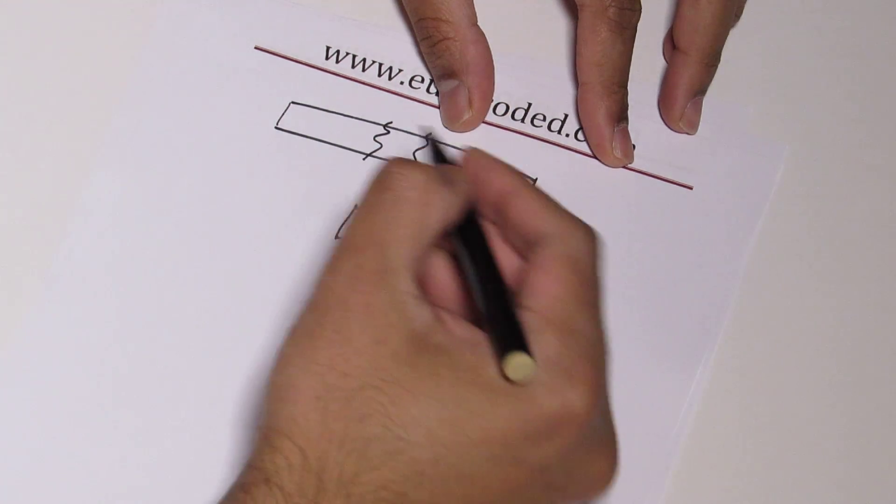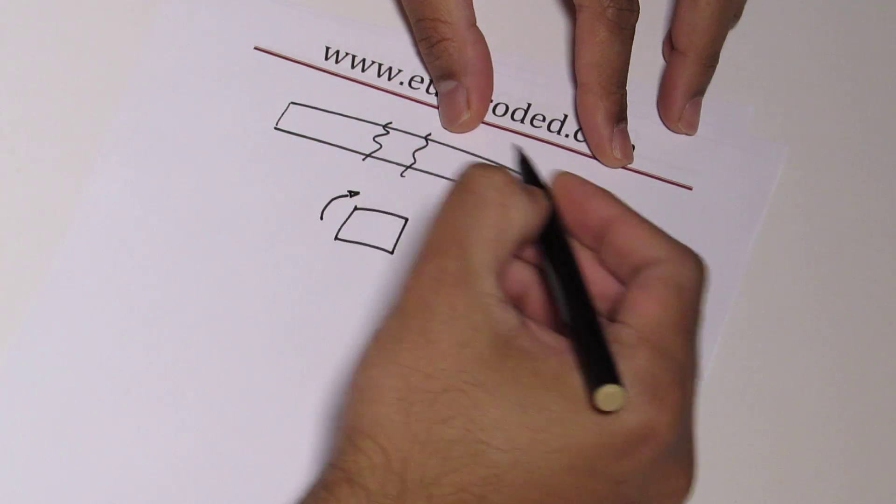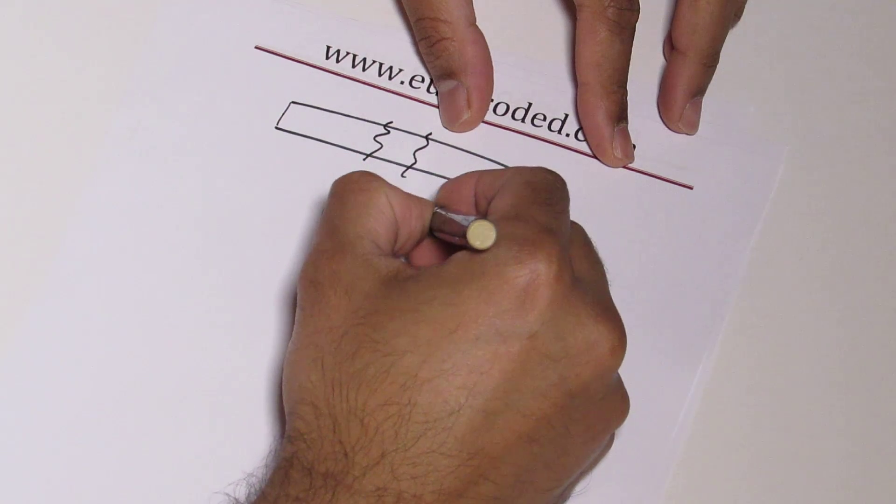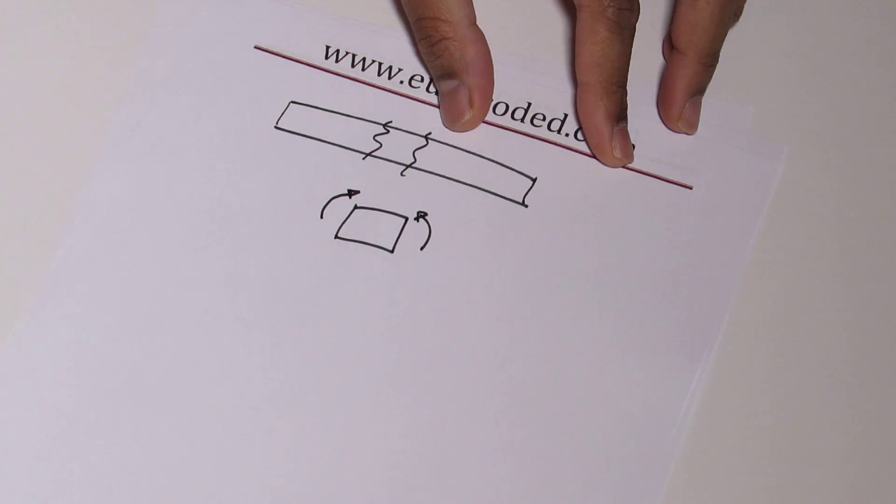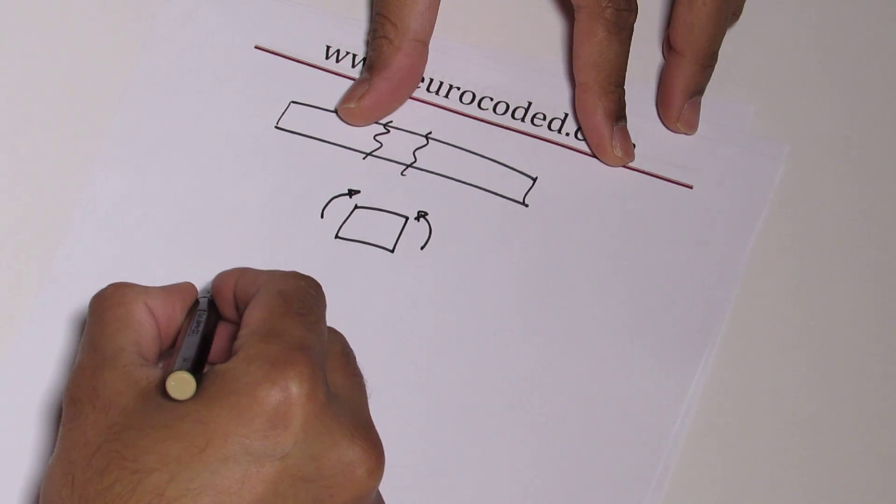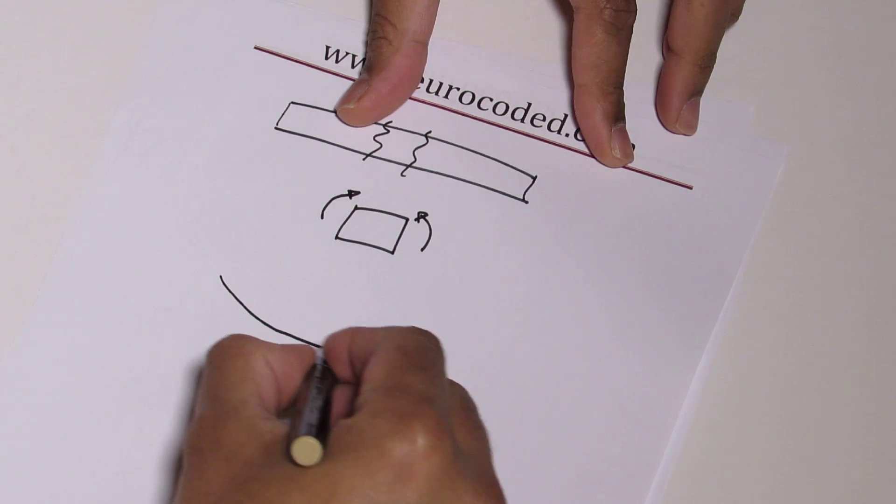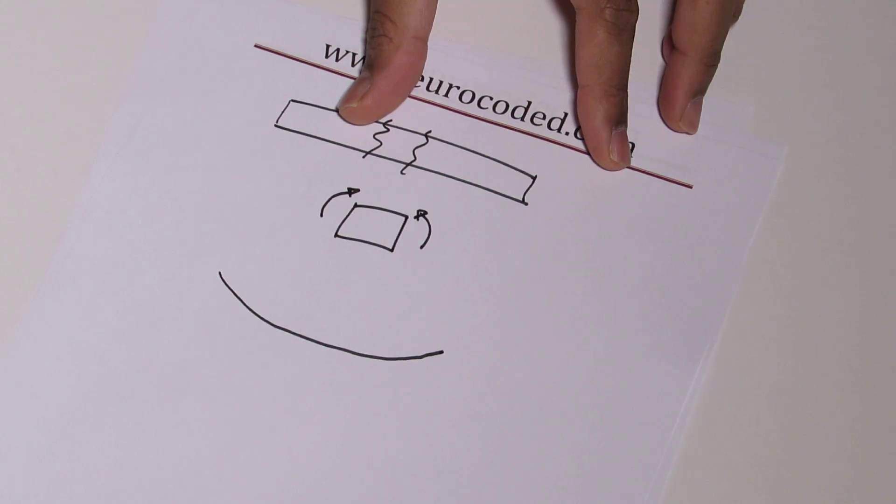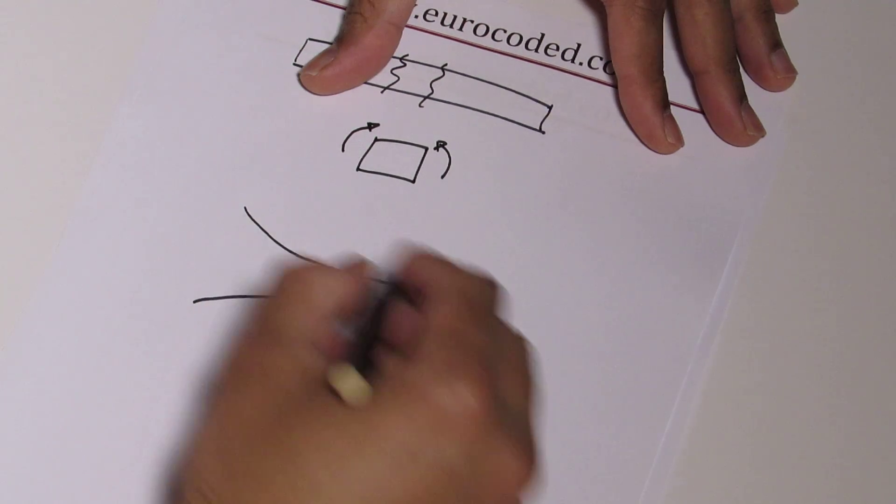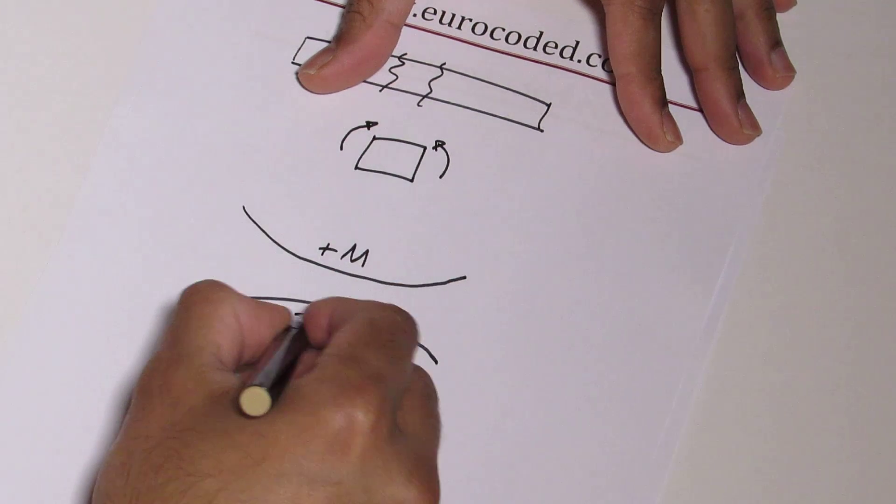So this is the typical sign convention, which is sagging moment is positive. Sagging moment is basically when a beam or a structural member bends like this, which is a sagging moment, and the other way is a hogging moment. So this is a positive M and this is negative M.